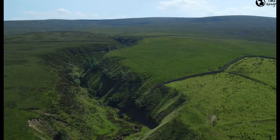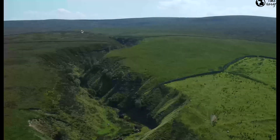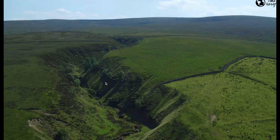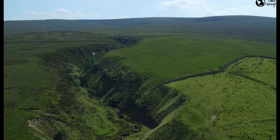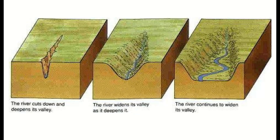First, we're going to think about V-shaped valleys. We can see a drone shot of Crossfell, which is near the source of the River Tees, which eventually flows towards Middlesbrough in the north of the UK. Here we can see snaking through the landscape this V-shaped valley — very steep, very narrow, with a small river flowing at the bottom.